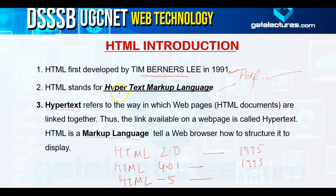HTML stands for HyperText Markup Language. Hypertext refers to the way in which web pages, or HTML documents, are linked together. The entire World Wide Web is connected with each other, meaning you can go from one page to another with the help of links. The links are present within the text. Markup Language tells the web browser how to structure and display content.